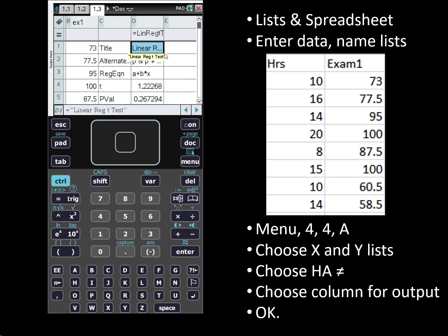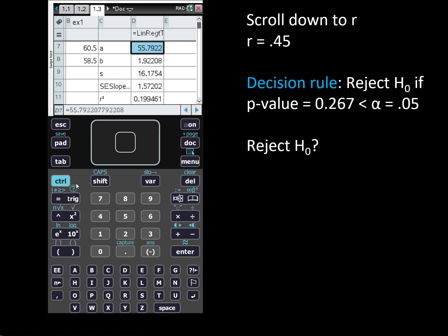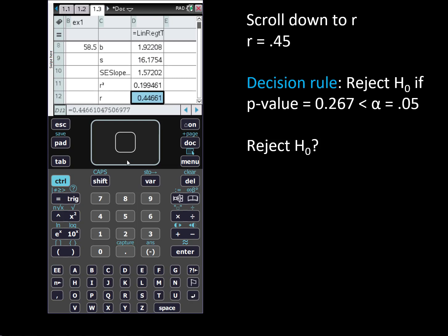It tells us we ran a linear regression t-test. Keep scrolling down until you get to the row for r, the sample correlation coefficient, which we see is 0.44661. That does indicate we have a positive relationship between the x and y variable, although we wouldn't know if this was linear unless we plotted it on a scatter plot.